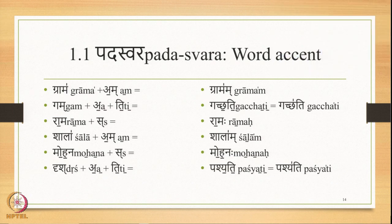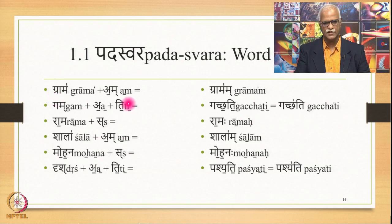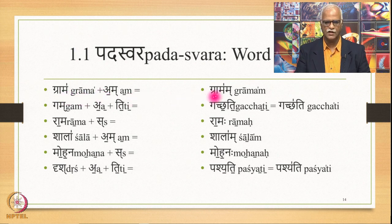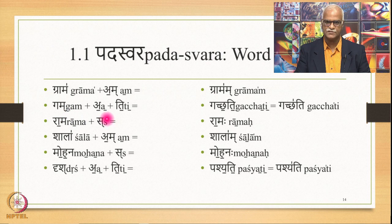When Grama gets its Am suffix added to it: Grama is Adyudath, Am is Anudath. This Anudathaswara and this Anudathaswara get a Sandhi, and in place of both comes one A, which retains its Anudathaswara status. So Gramam continues to remain initially accented. When we have Grama to which A is added — which is Anudathaswara — to which T is also added, which is also Anudathaswara, we add both of them and then Grama is substituted by Gatcha.